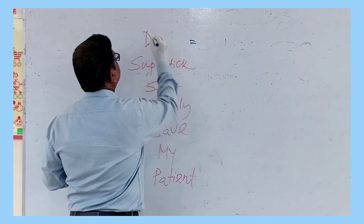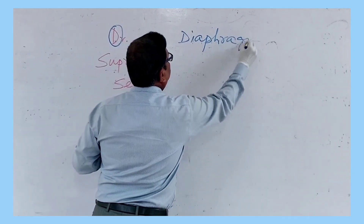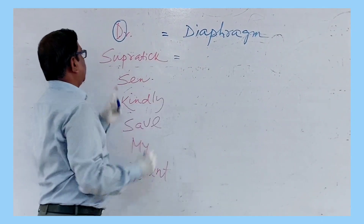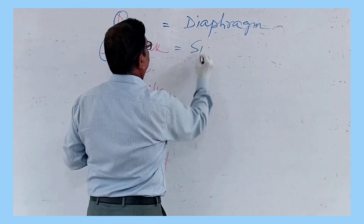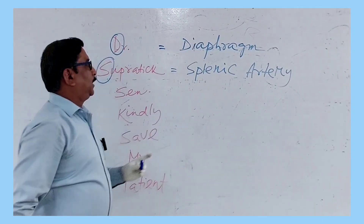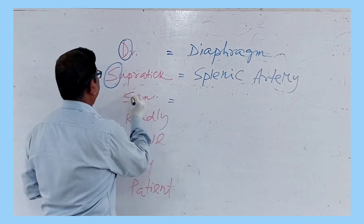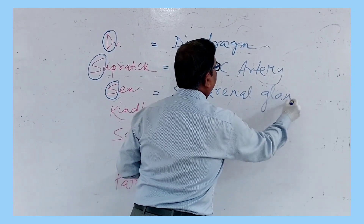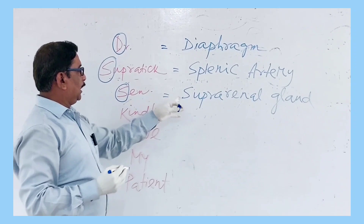Let's decode the mnemonic. D stands for diaphragm — more specifically, the left crus of the diaphragm. The first S stands for splenic artery, which is a tortuous artery and one of the branches of the celiac trunk, passing behind the stomach into the spleen. The next S stands for suprarenal gland — specifically the left suprarenal gland, because the stomach is mainly on the left side.